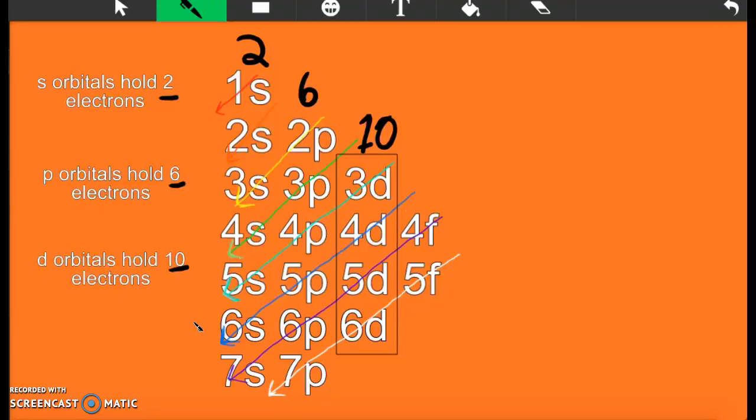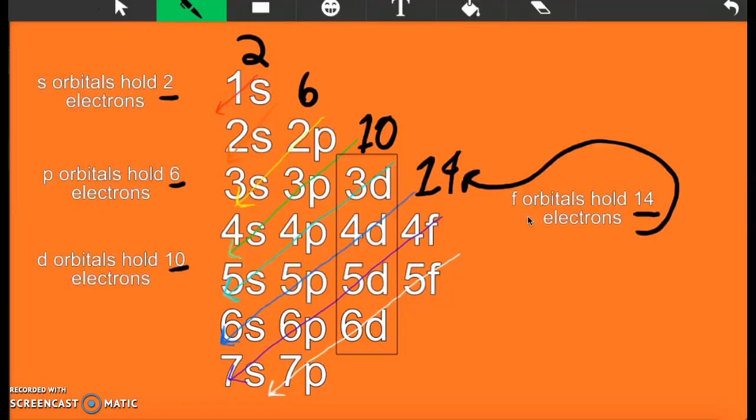And then the f's, they're the very last ones, they hold 14. For those of you that are visual rather than auditory, here's your little note, f orbitals hold 14 electrons.